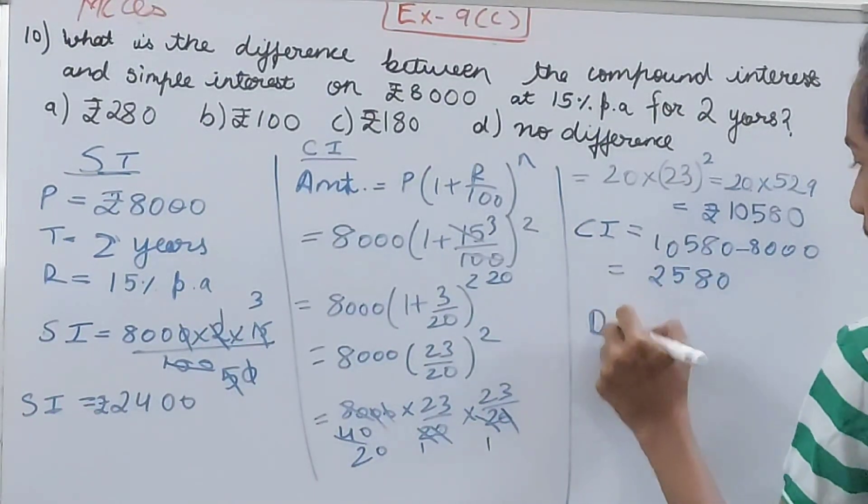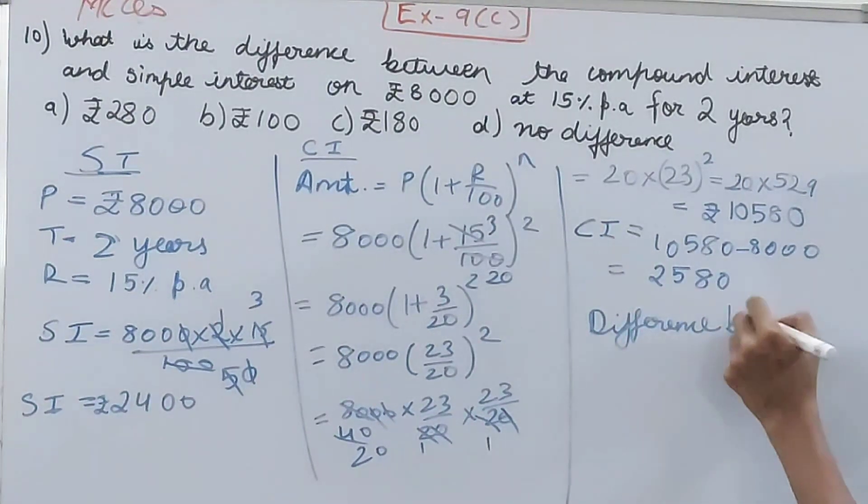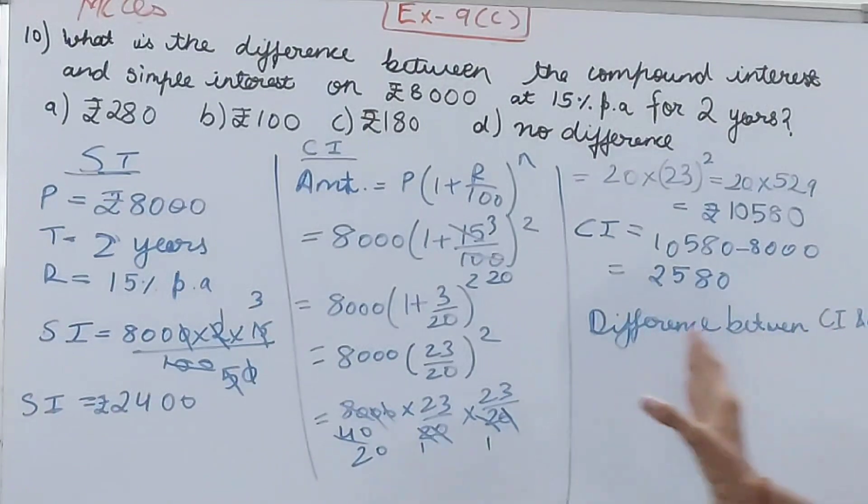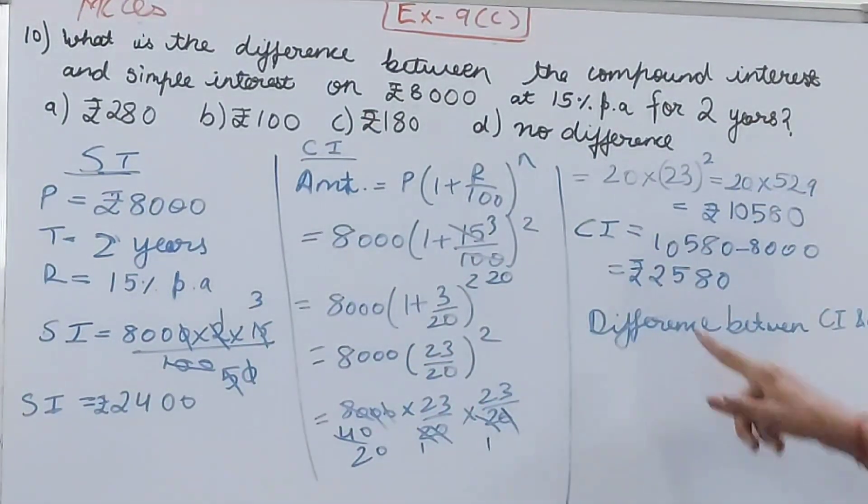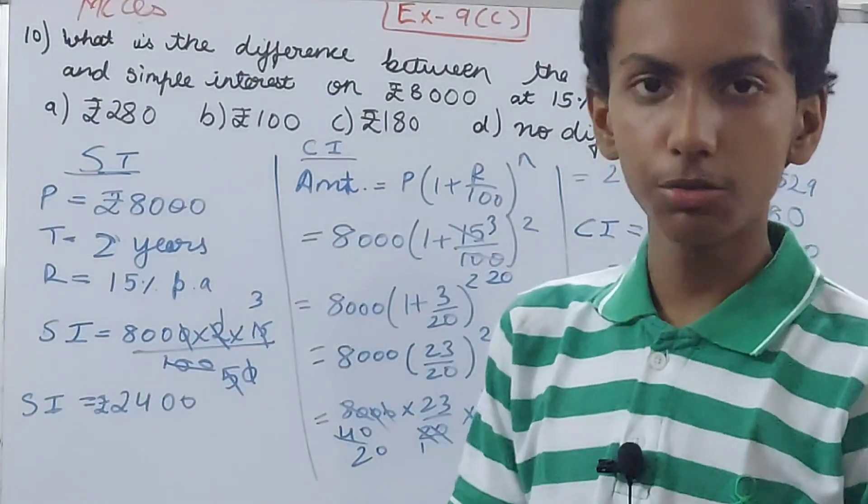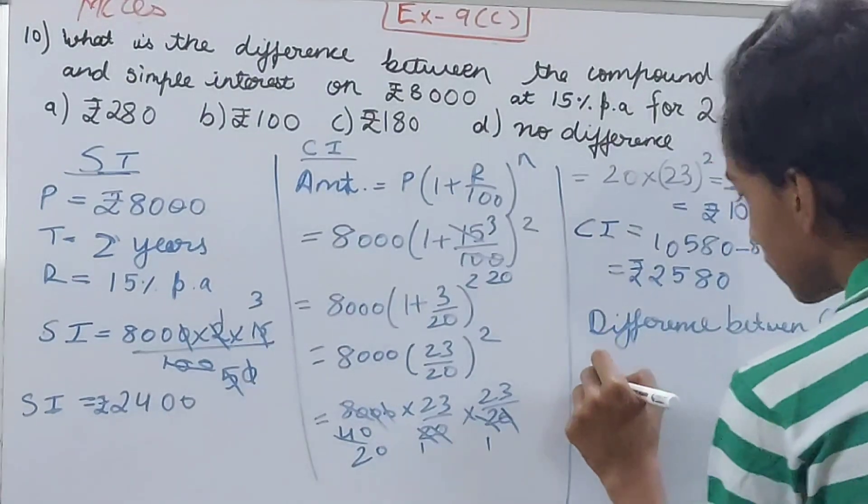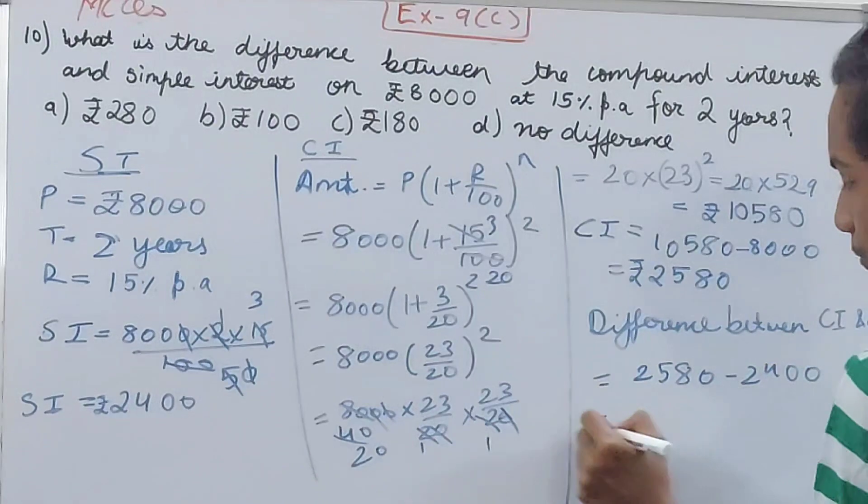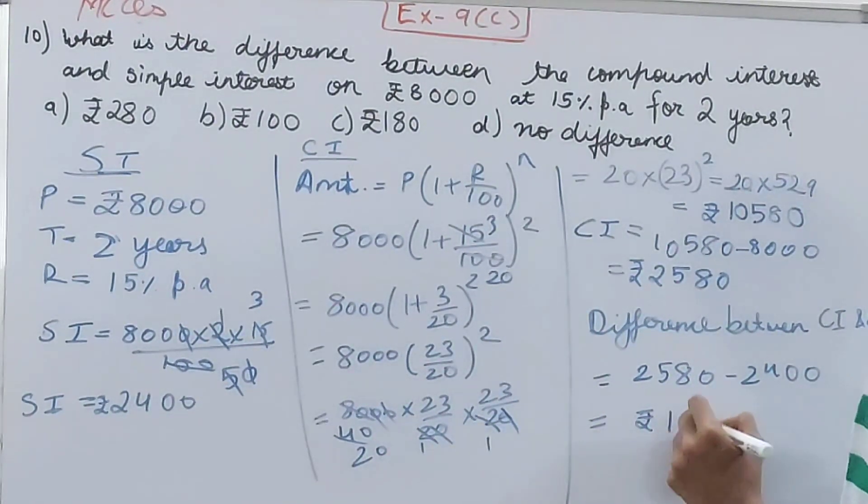The difference between CI and SI: we have calculated both of them. 2,580 is compound interest and simple interest is 2,400. The greater is the compound interest, so I'll put that first: 2,580 minus 2,400. Therefore your difference is rupees 180. This becomes your answer, which is option C, so option C is the correct option.